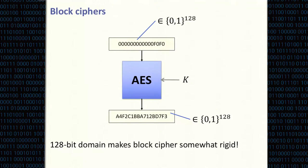You're probably all familiar with the concept of a block cipher like AES, which is an algorithm that encrypts plaintext blocks of a certain fixed length — say 128 bits — into ciphertext blocks of the same length using a secret key. One issue with block ciphers is that even though they are very important primitives used everywhere in cryptography, they're somewhat rigid in that their domain is fixed to 128 bits.